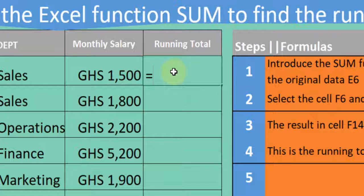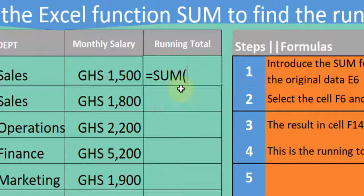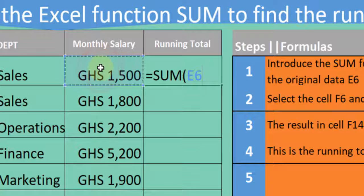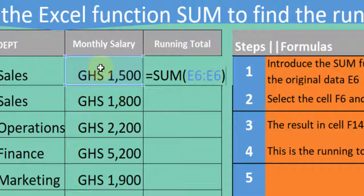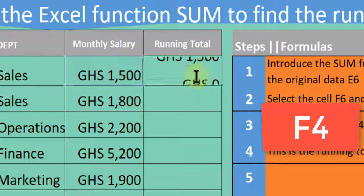The SUM function is introduced by an equals sign, then SUM. We want to sum the monthly salary cumulatively, so we introduce our SUM. We go to the shift key to introduce the range, then we block the first cell by pressing F4 to lock it. Then we press Enter.